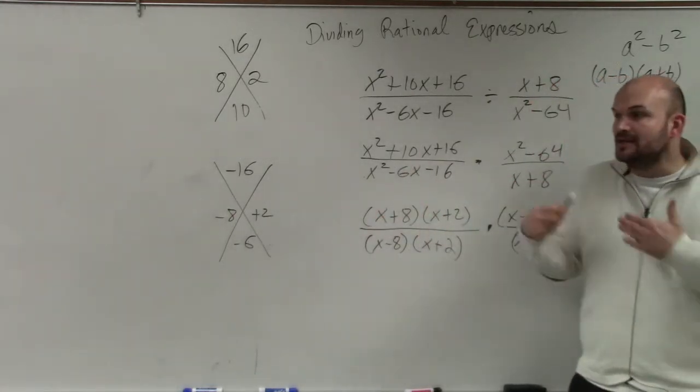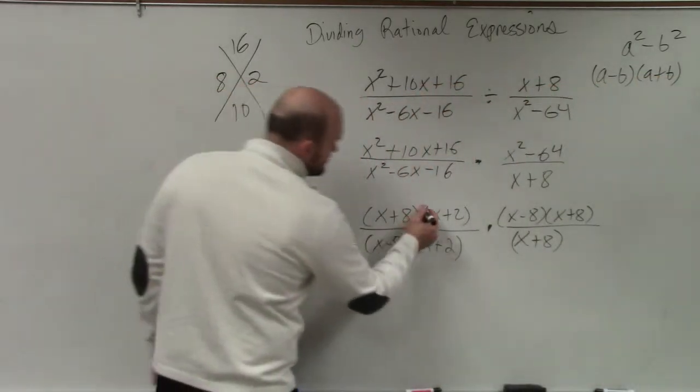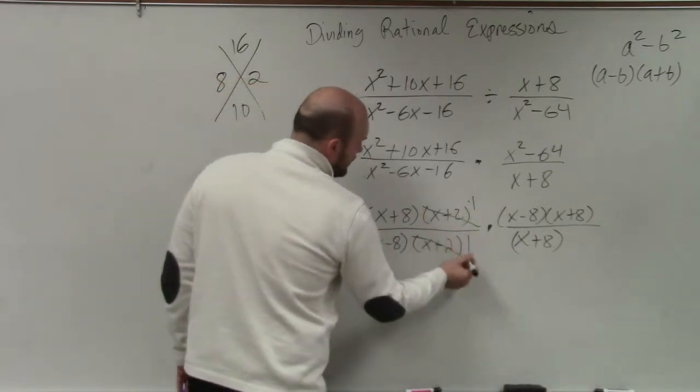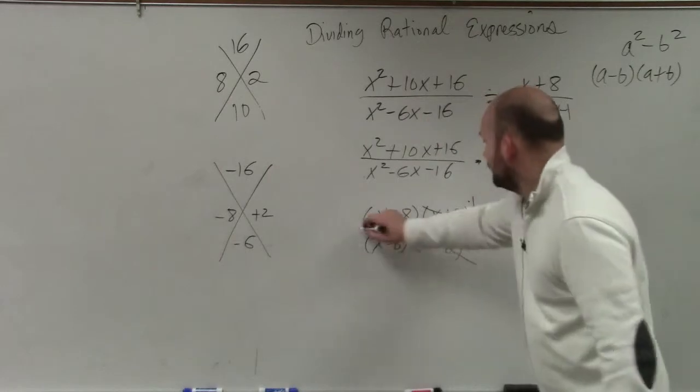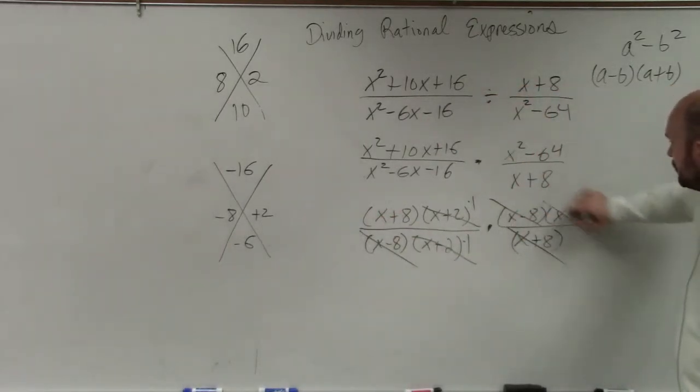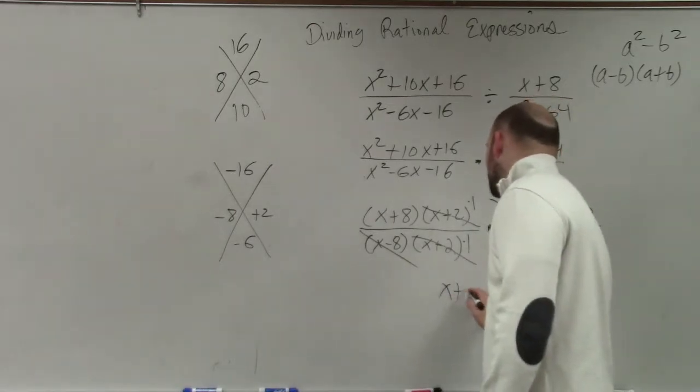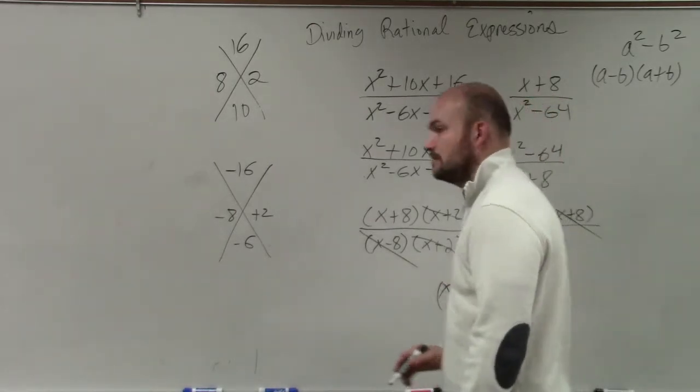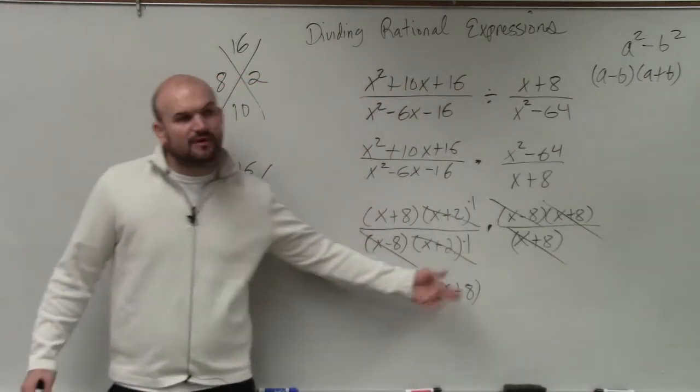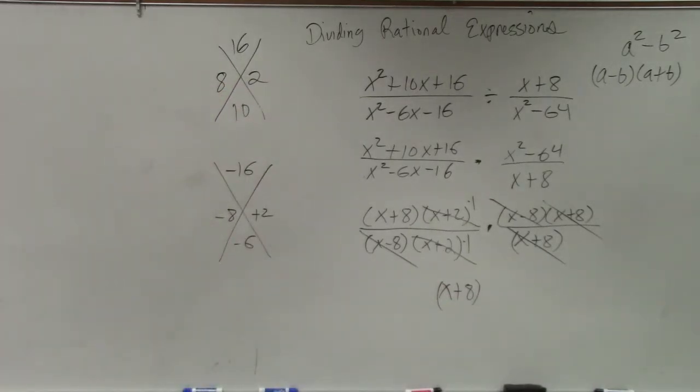So now what we do is we just find terms that are exactly the same in the numerator that divides to 1 over 1. We have x minus 8 over x minus 8, we have x plus 8 over x plus 8, and the only thing we're left with is x plus 8. Because everything else divides to 1 and x plus 8 in the numerator, so I could write it over 1 if I wanted to. That's it, that's going to be it.